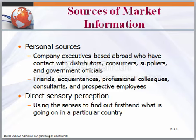The sources of market information include personal sources and direct sensory perceptions. Personal sources include company executives based abroad who have contact with distributors, consumers, suppliers and government officials, as well as friends, acquaintances, professional colleagues, consultants and prospective employees. Under direct sensory perception, one uses the senses to find out firsthand what is going on in a particular country — often the background information or context from observing a situation can help fill in the big picture.